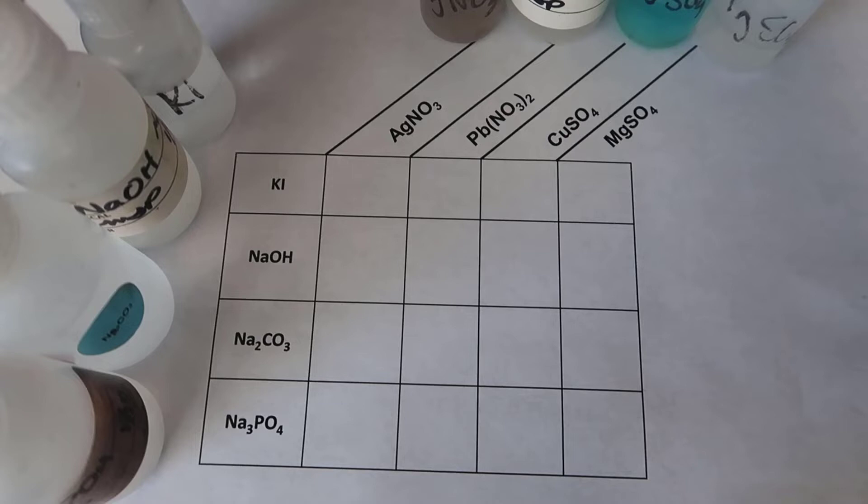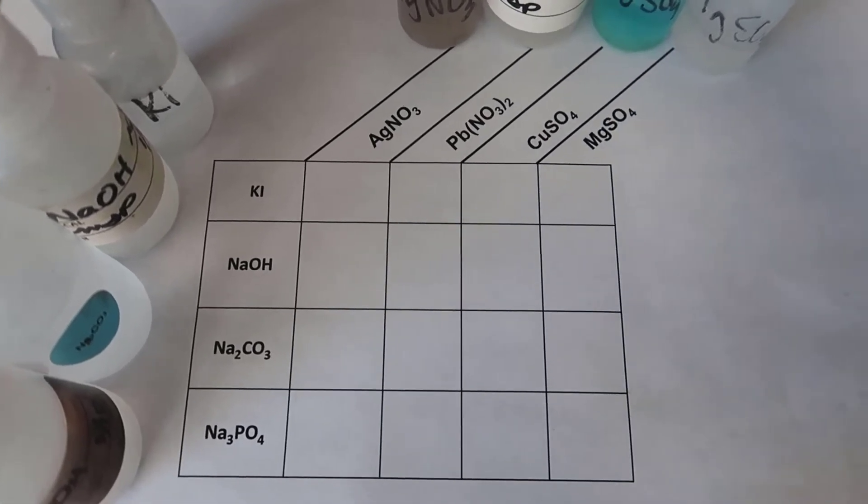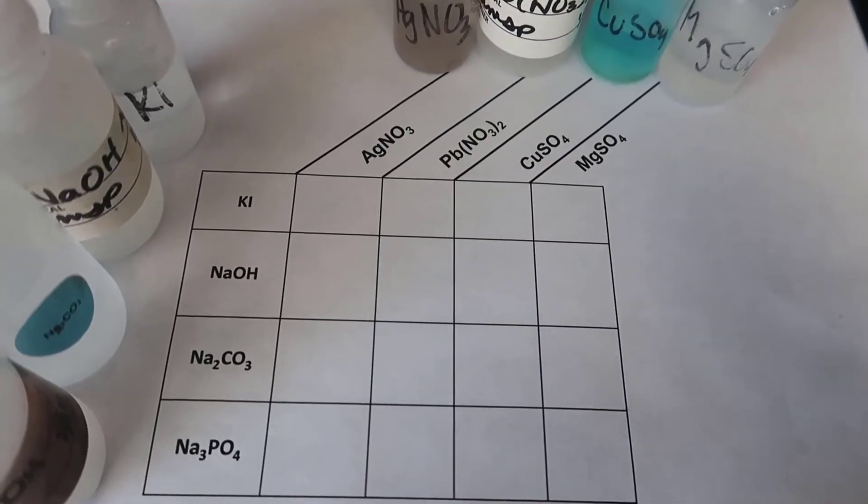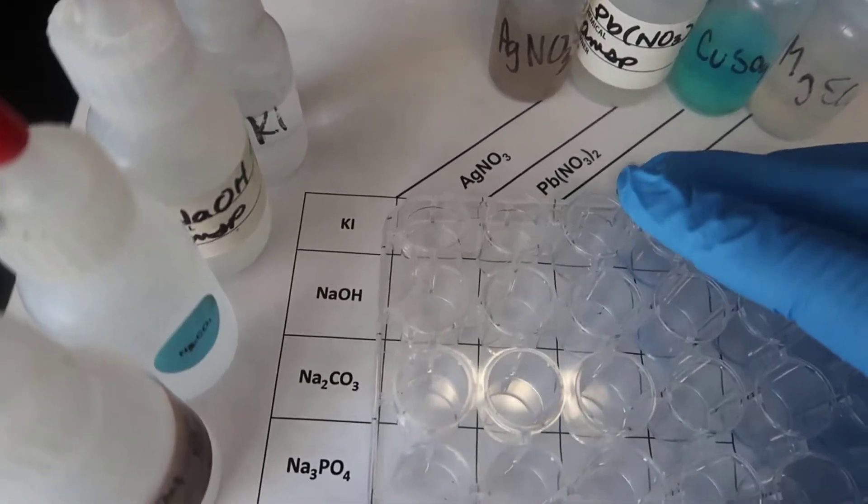And so if you don't have a data table that looks like this, I would recommend that you create one. And I am going to take two drops of each of these ionic solutions and put them into a single well plate.